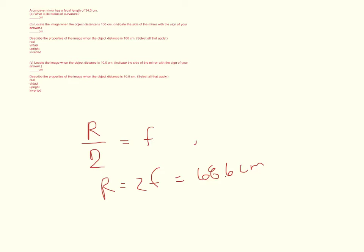Then it says where's the image if we place an object 100 cm in front of it. So we've got to use the mirror equation. We get 1/P + 1/Q equals 2/R or 1/F. I prefer 1/F in this case because it gives us the focal point.